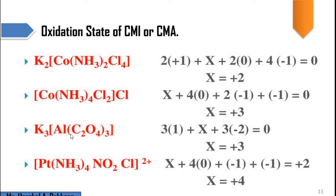Another example has aluminum as the metal. The calculation is: 3 × (+1) plus X plus 3 × (−2) for oxalato equals 0. Oxalato is a bidentate ligand; one oxalato donates 2 negative charges, so 3 × (−2) = −6. Thus 3 + X − 6 = 0, X − 3 = 0, and X = +3. Aluminum is present in the +3 oxidation state.